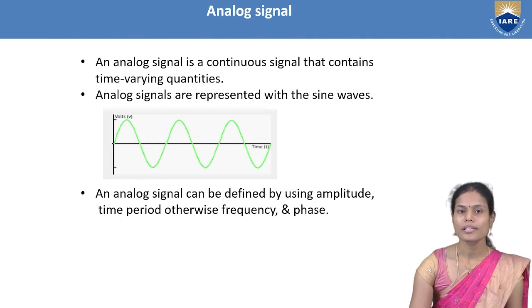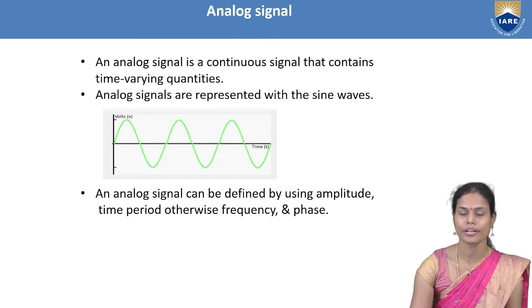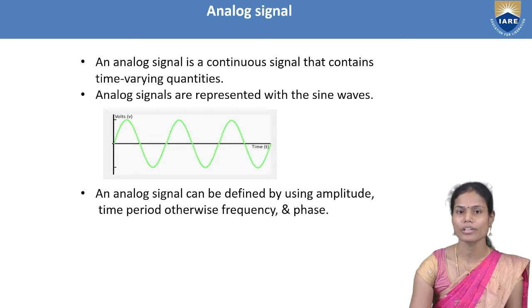In the case of sinusoidal signals, we have the sinusoidal waveform as well as the cosinusoidal waveform. In the case of non-sinusoidal signals, we have square wave, pulse wave, as well as the triangular wave.